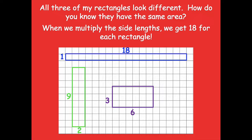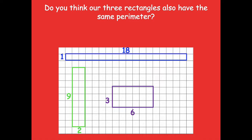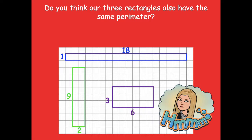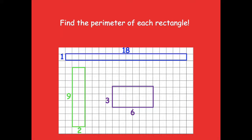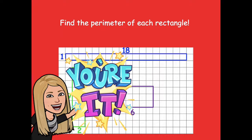When we multiply the side lengths we get 18 for each rectangle — you could count the 18 squares or multiply the side lengths to check. Do you think our three rectangles also have the same perimeter? To find out, find the perimeter of each rectangle. Remember, opposite sides are equal in a rectangle, so label those opposite side lengths — that will make finding the perimeter easier. Pause and find the perimeter for each rectangle.